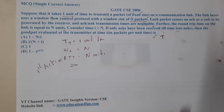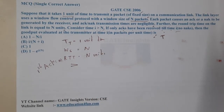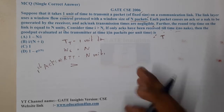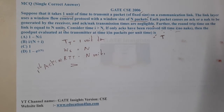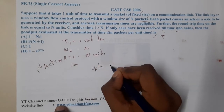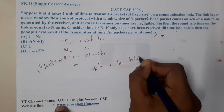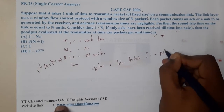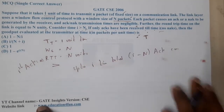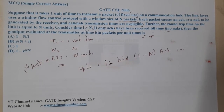Up to time i, the total number of acknowledgements received is nothing but i minus N. That is what they have told us, and that represents the number of successfully delivered packets.